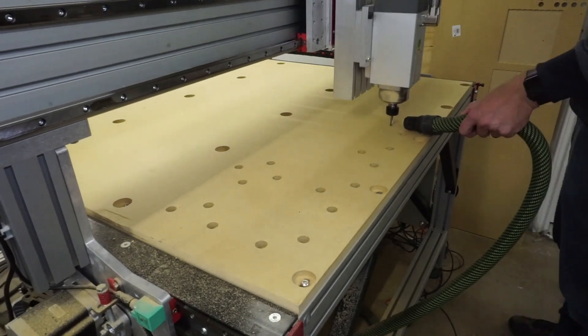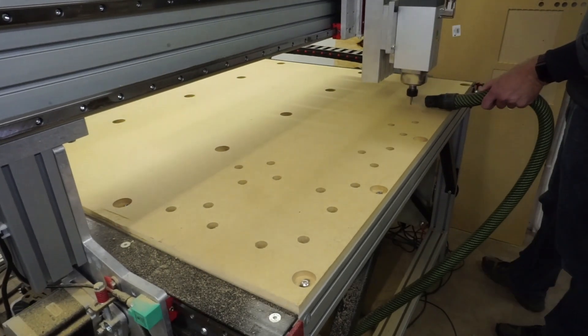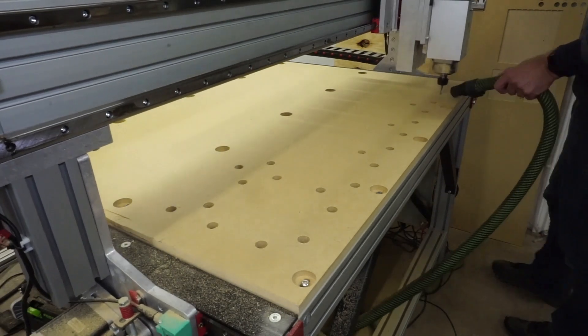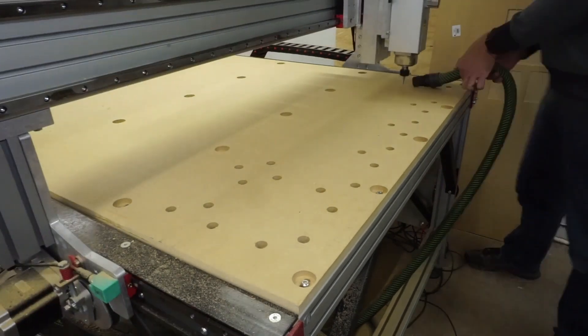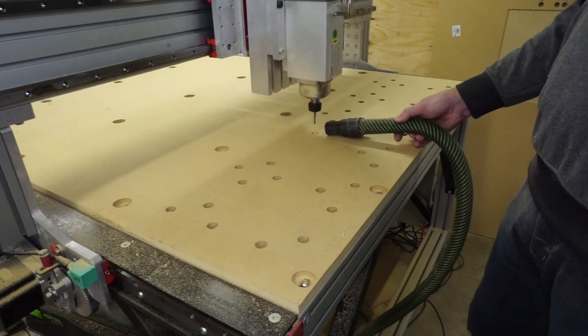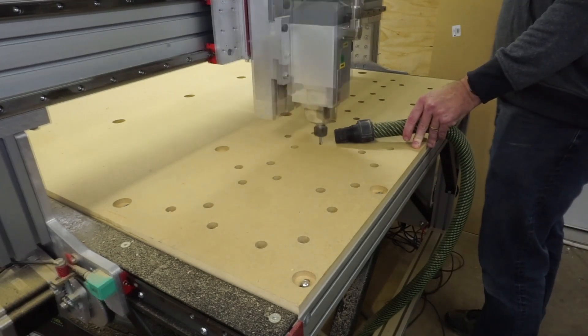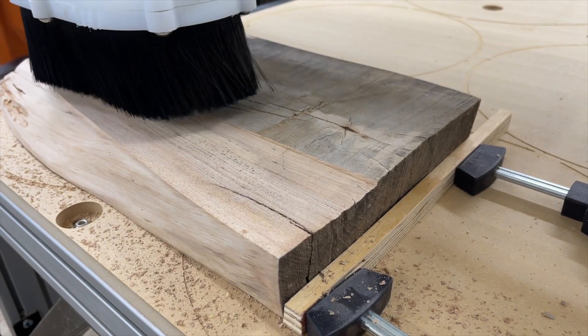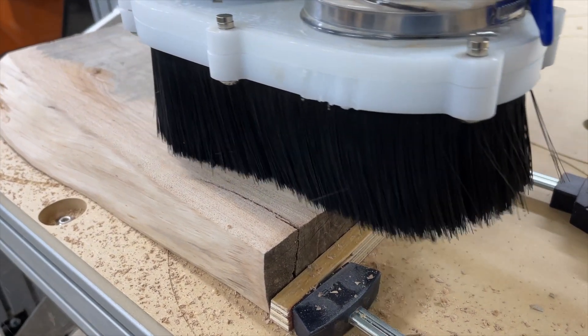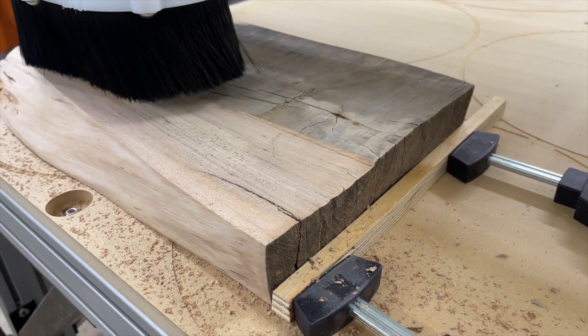So now I have a spoil board that I can clamp work pieces to using side pressure but no way to clamp with downward pressure onto the spoil board. This is enough in some situations and as you will soon see useless in others. Here I was simply flattening a slab using a down cut spiral bit. The clamps held the piece in place and all the pressure from the cutter was pushing down. This worked just fine.